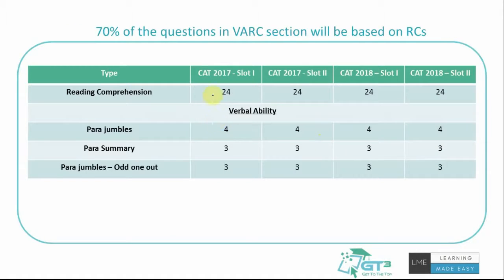Let's keep this in mind and look at how to prepare. As we have discussed, most of the questions are coming from reading comprehension: 24 questions out of 34. Four para jumbles, three paragraph summary, and three para jumbles with odd one out. That is the split of 34 questions, which has been the same pattern for all three years. So we should be able to do well in reading comprehension along with others, but this is the most important section because it has 70 percentage of the questions.